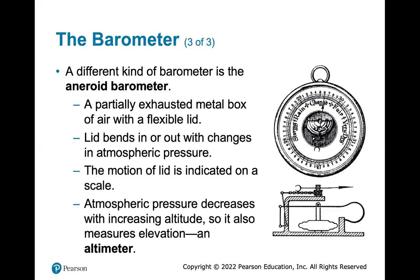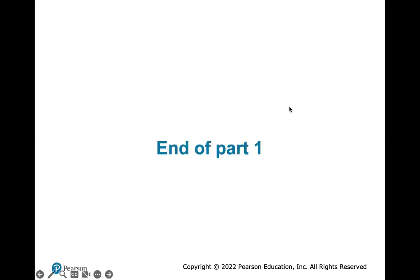A different kind of barometer is the aneroid barometer. It contains a partially exhausted metal box with a flexible lid. As the lid bends in or out with changes in atmospheric pressure, the movement is indicated on a scale. Since atmospheric pressure decreases with increasing altitude, it can also be used as an altimeter to measure altitude.